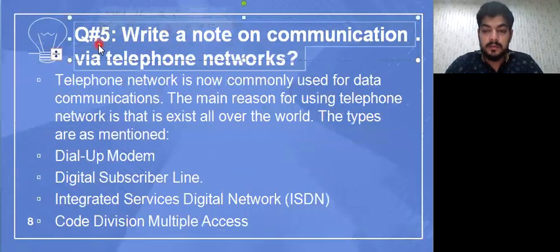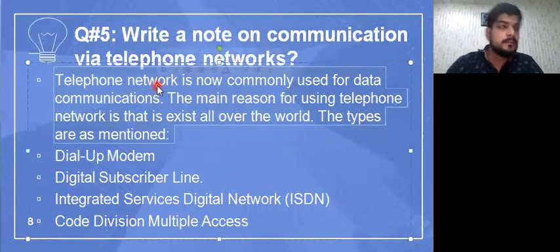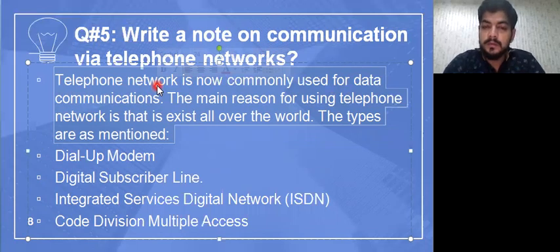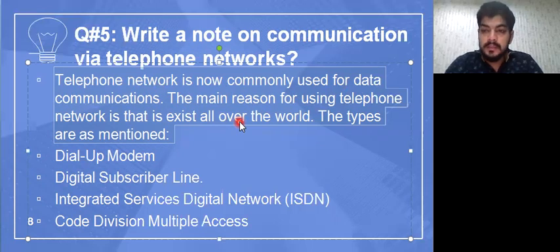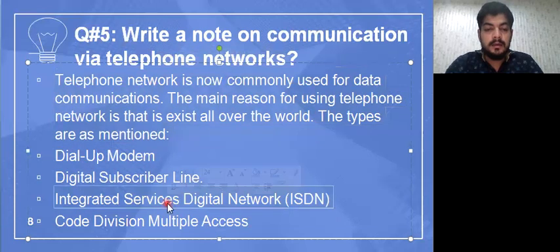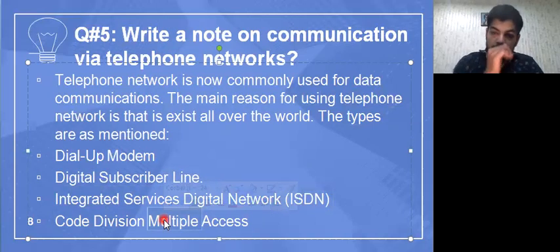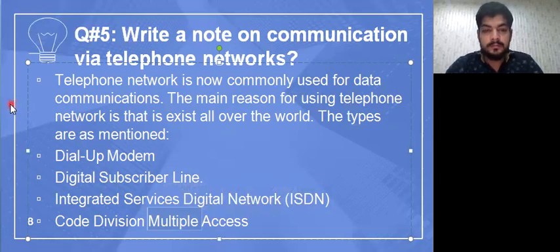The fifth question is: write a note on communication via telephone network. The telephone network is now commonly used for data communication. The main reason for using telephone network is that it exists all over the world. The types mentioned include dial-up modem, digital subscriber line, integrated services digital network, and code division multiple access.